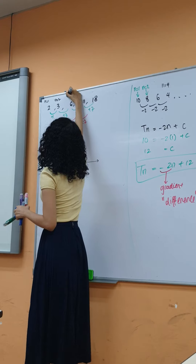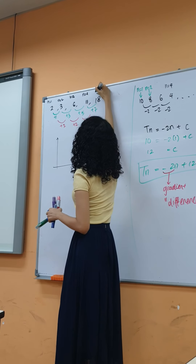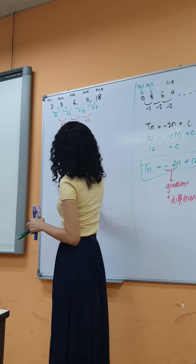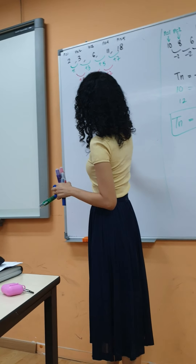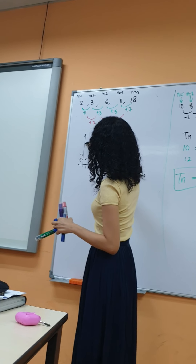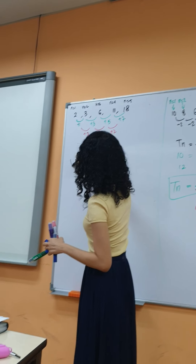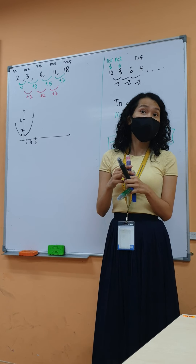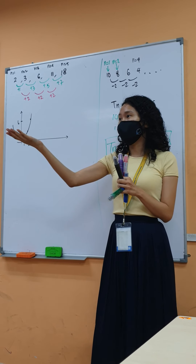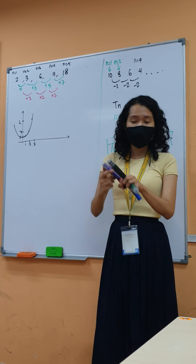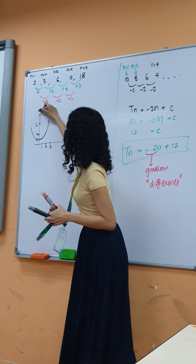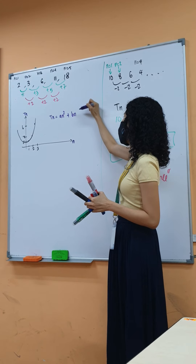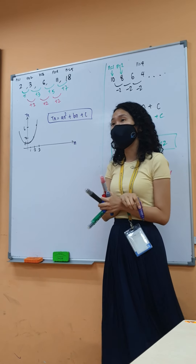So if you sketch this — let's say n equals to 1, 2, 3, 4 — when n=1 I get 2, n=2 I get 3, n=3 I get 6, and so on. You're going to get something like a quadratic. So when you have a quadratic, what is the general formula? ax² + bx + c, right? In this case it's in terms of n, so our general formula is an² + bn + c.